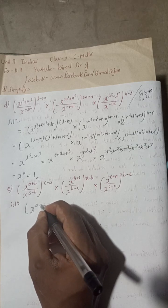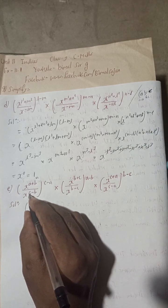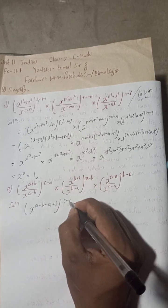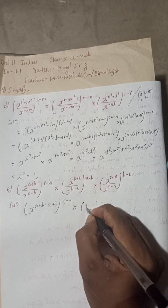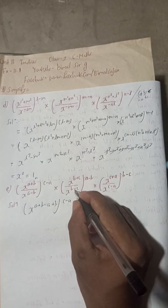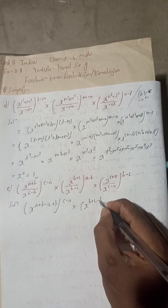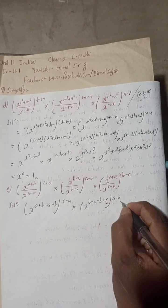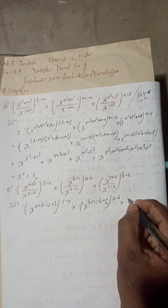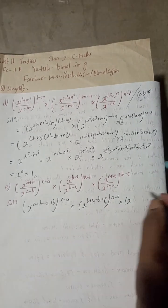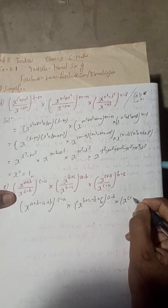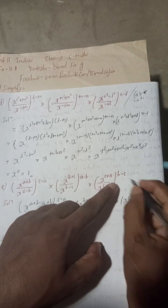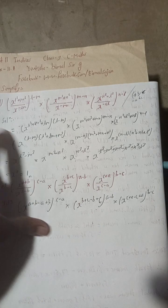Here we have x to the power (a+b) — when the power goes up, the plus becomes minus, so we get (a minus a) and (minus b). Then x to the power (b+c) — here (b becomes minus b) and (minus c becomes plus c), with (a minus b). Then x to the power (c+a) — here (plus c becomes minus c) and (minus a becomes plus a), with (b minus c).